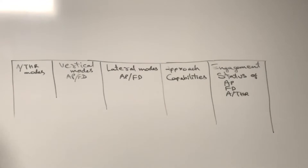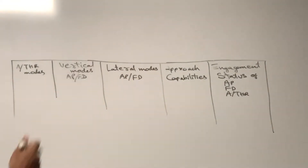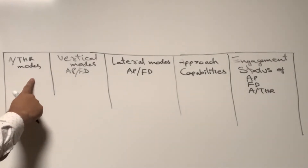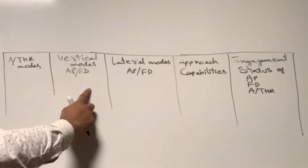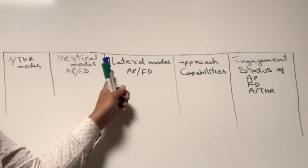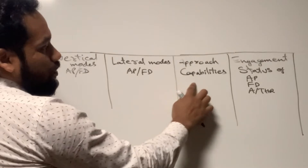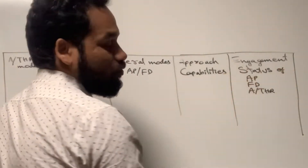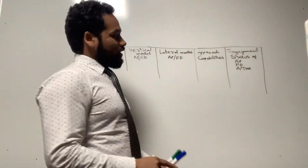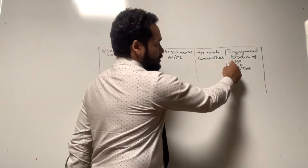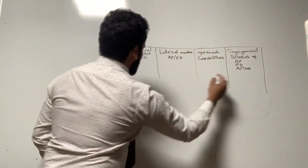So the five columns of the PFD show this information: the first column is for autothrust, second column for vertical modes of autopilot or flight director, third column for lateral modes of autopilot or flight director, fourth column for approach capabilities, and fifth column for the engagement status of autopilot, flight director, and autothrust — that is the flight guidance system.